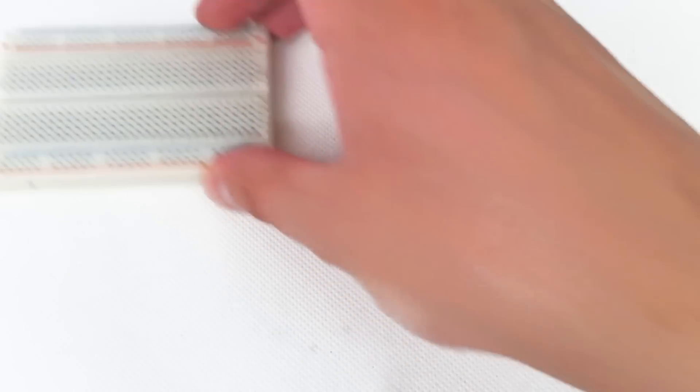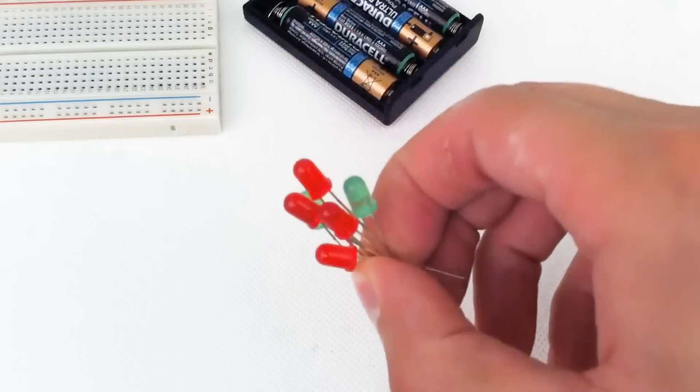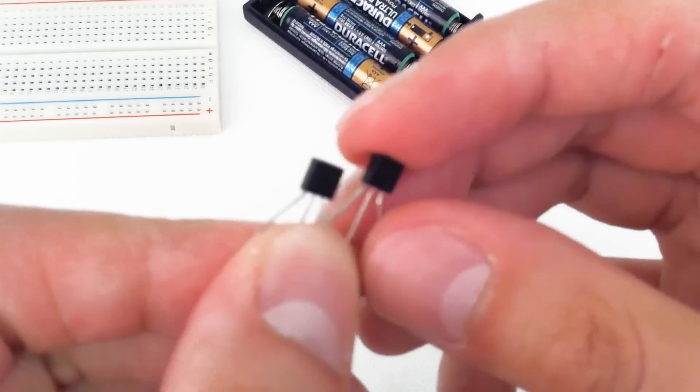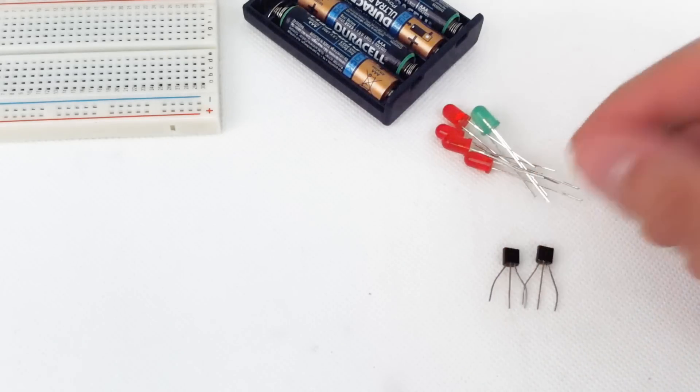Let's start with the components we'll need. Of course we have our breadboard, our 6 volt power supply, 4 AAA batteries, some LEDs - here we've chosen 6, a mix of green and red, and two BC547 transistors for the Darlington pair.